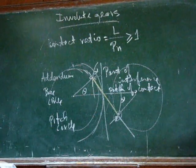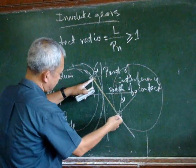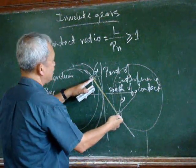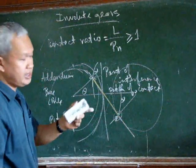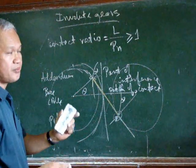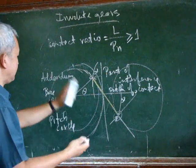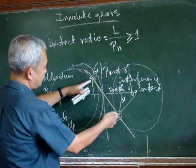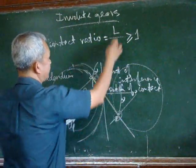So how do we determine that? We have the path of contact here. We can determine it graphically or we can have mathematical derivations to be able to determine this length of the path of contact.